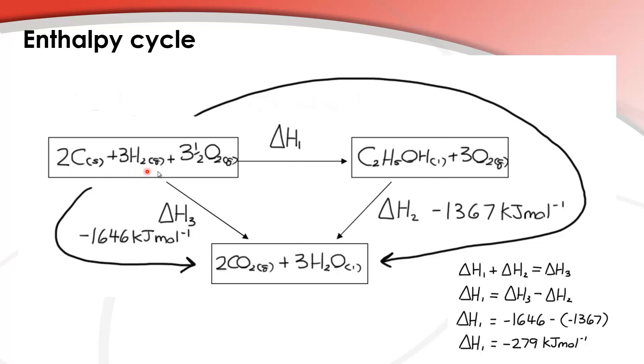The anti-clockwise route, we're combusting each one of these, so we're combusting the carbon with oxygen, we're combusting the hydrogen with oxygen, and then we're adding up the enthalpy changes to give us this total here. So we know the ΔH2, which is burning the ethanol and oxygen to give us these products, and we know burning each one of these individually, we can add these together to give us this value here.